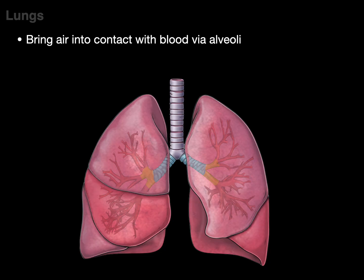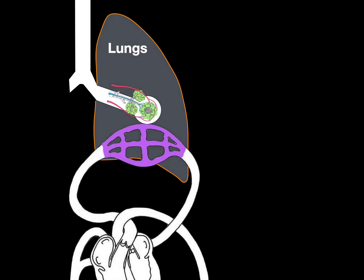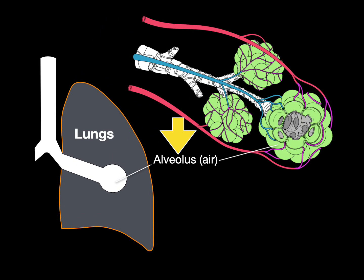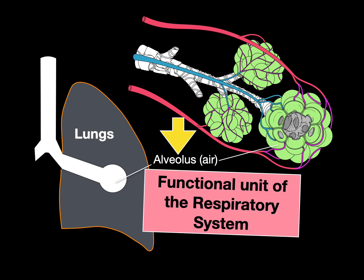Lungs basically bring air into contact with blood via the alveoli — that's their principal function to keep us alive. There's an alveolus filled with air and pulmonary capillaries filled with blood; this is where gas exchange occurs. Lungs are bags full of 150 million alveoli to allow gas exchange to occur. That's why the alveoli are the functional unit of the respiratory system.